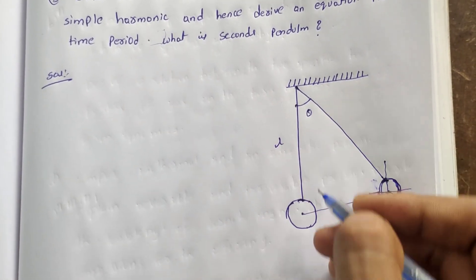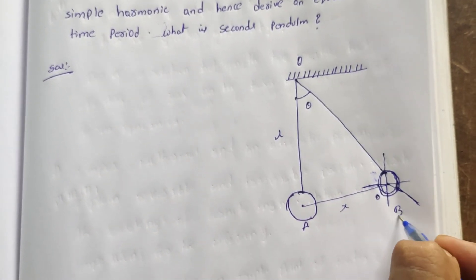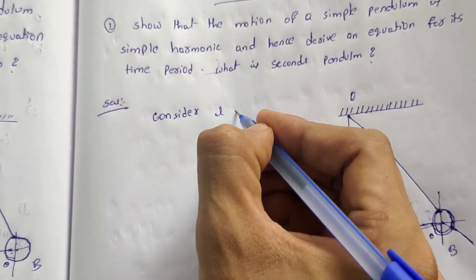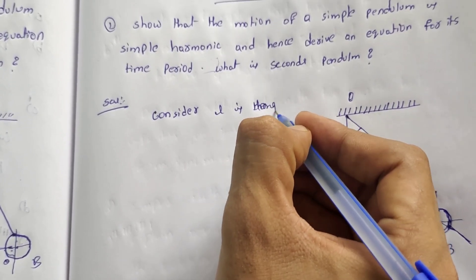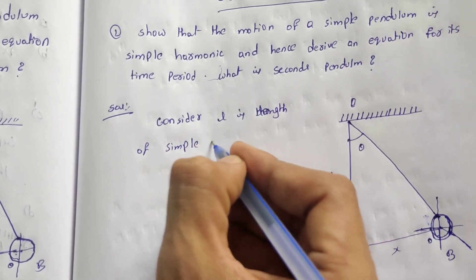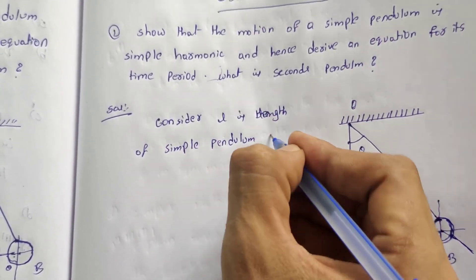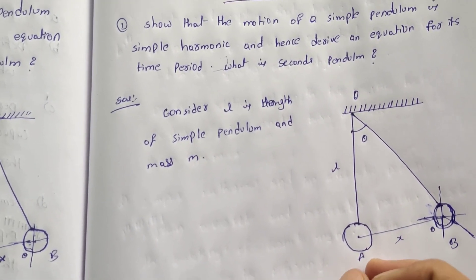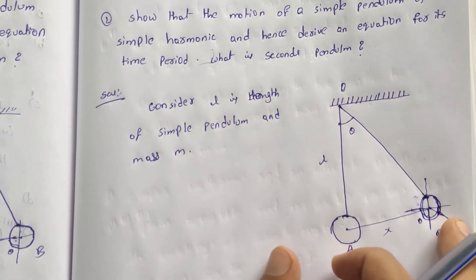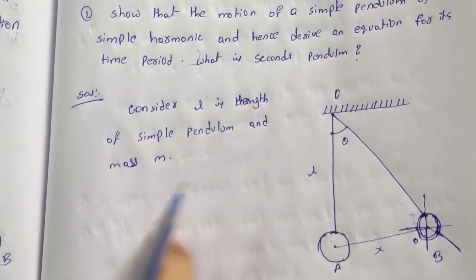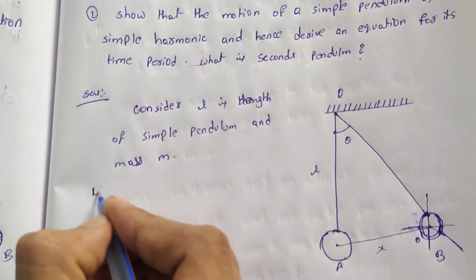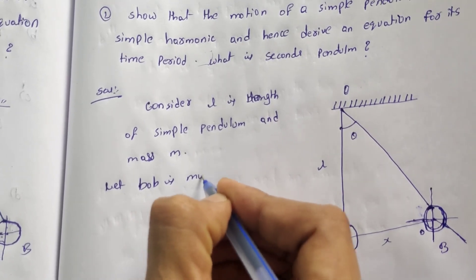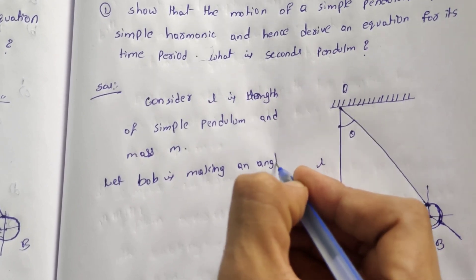So this is the diagram. The triangle name is OAB. So consider L is the length of the simple pendulum, and mass M. Let the bob make an angle theta.